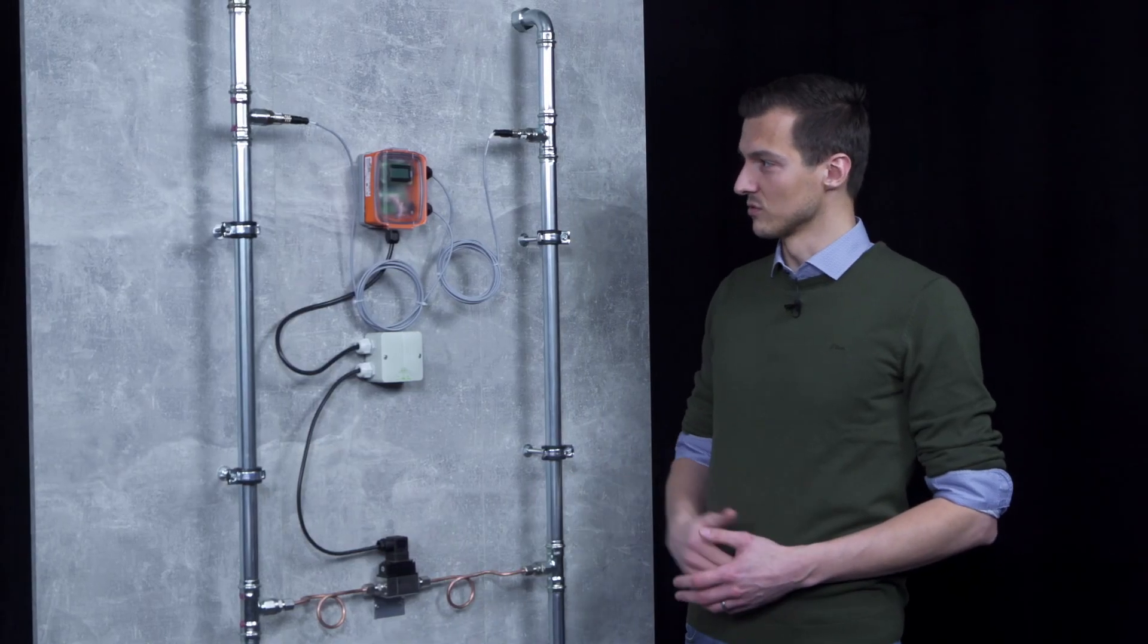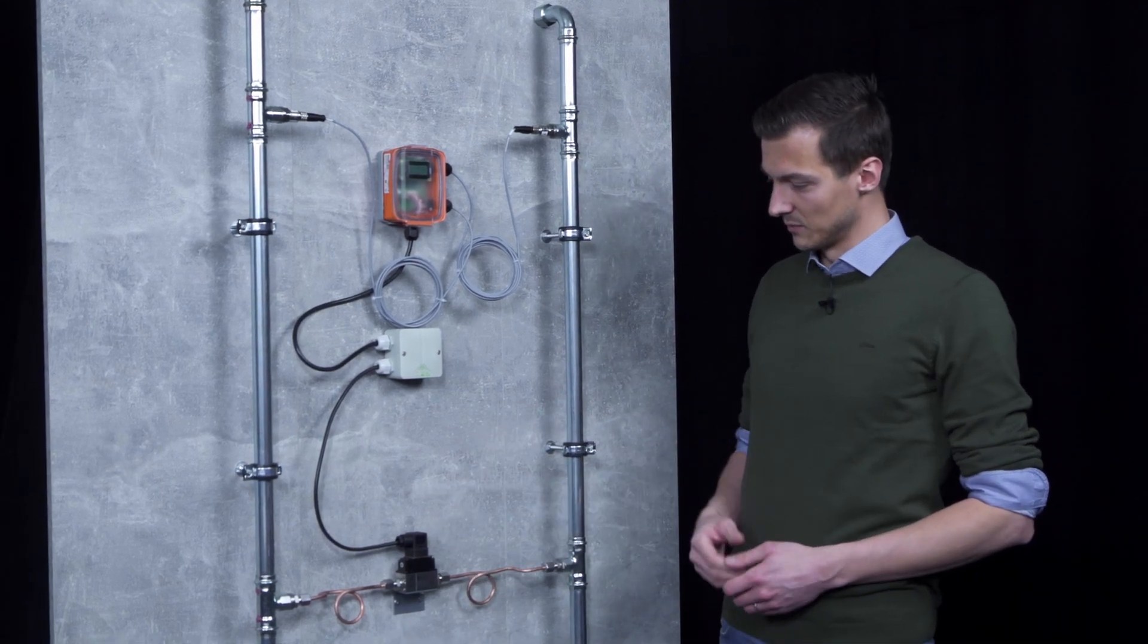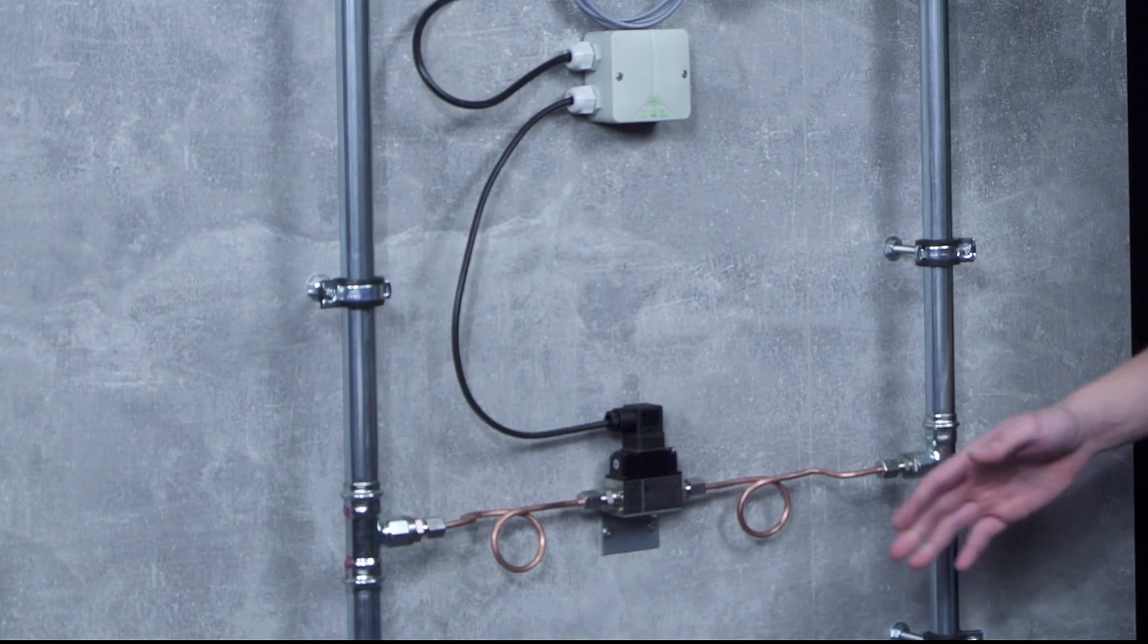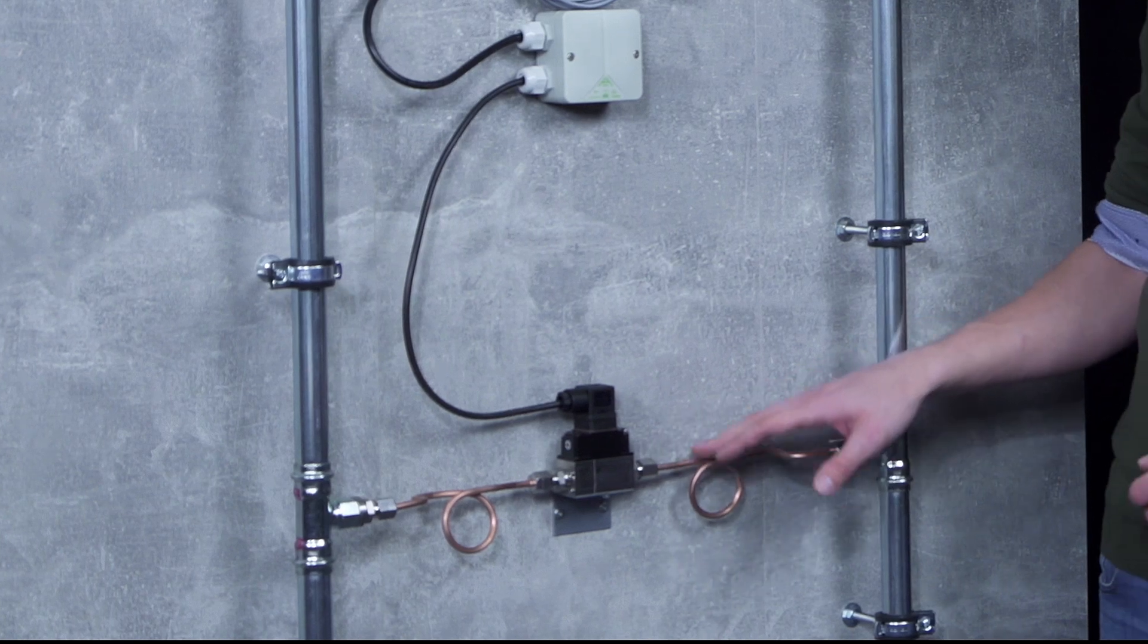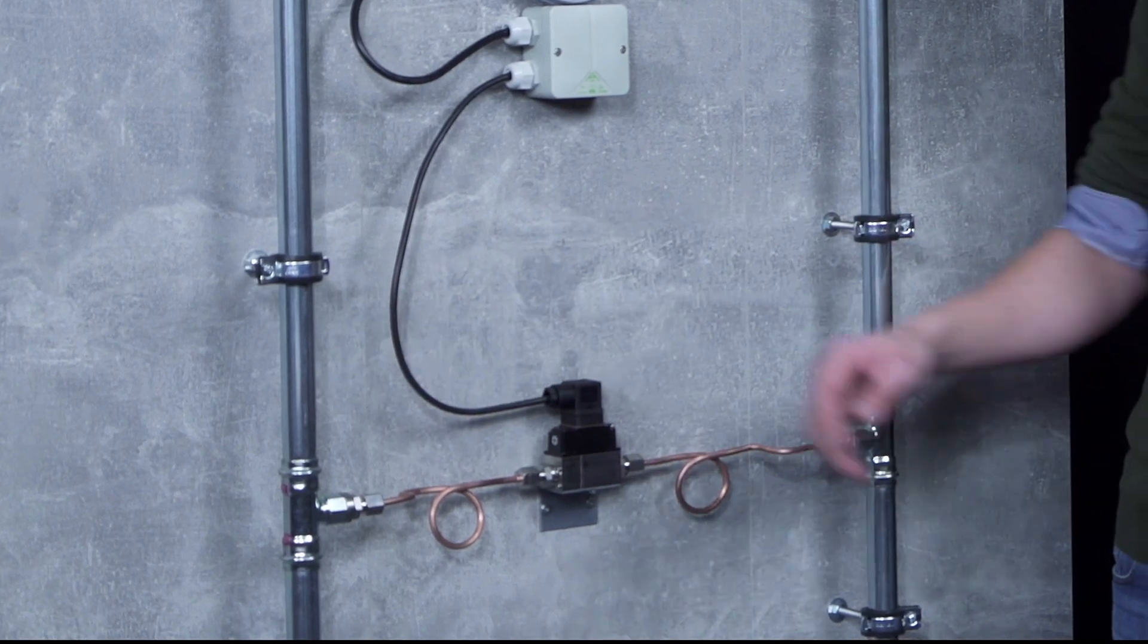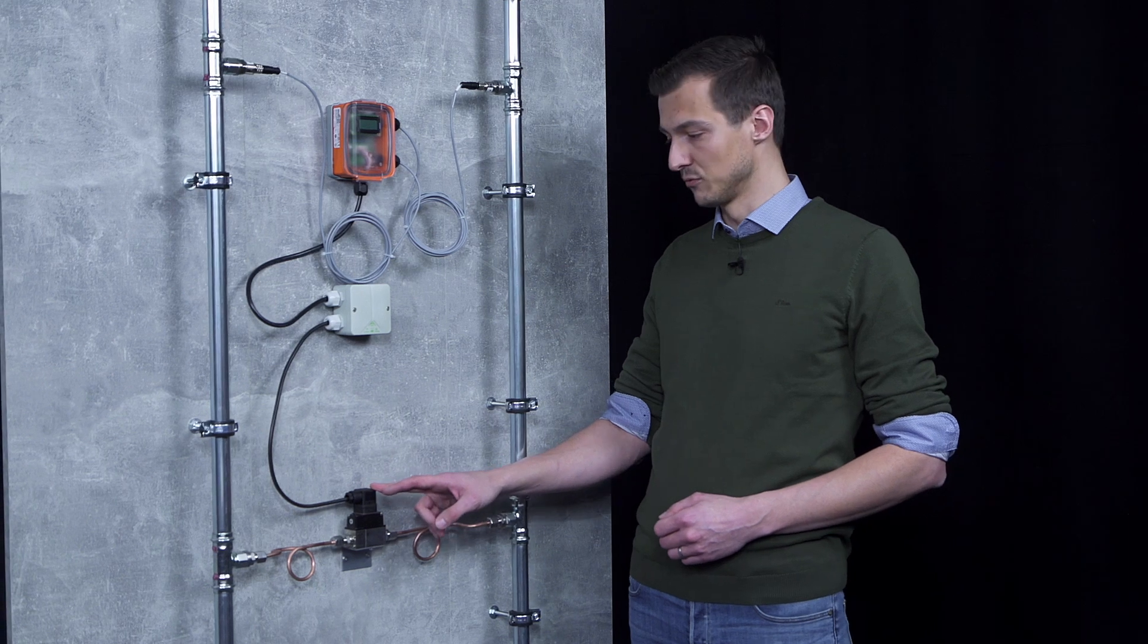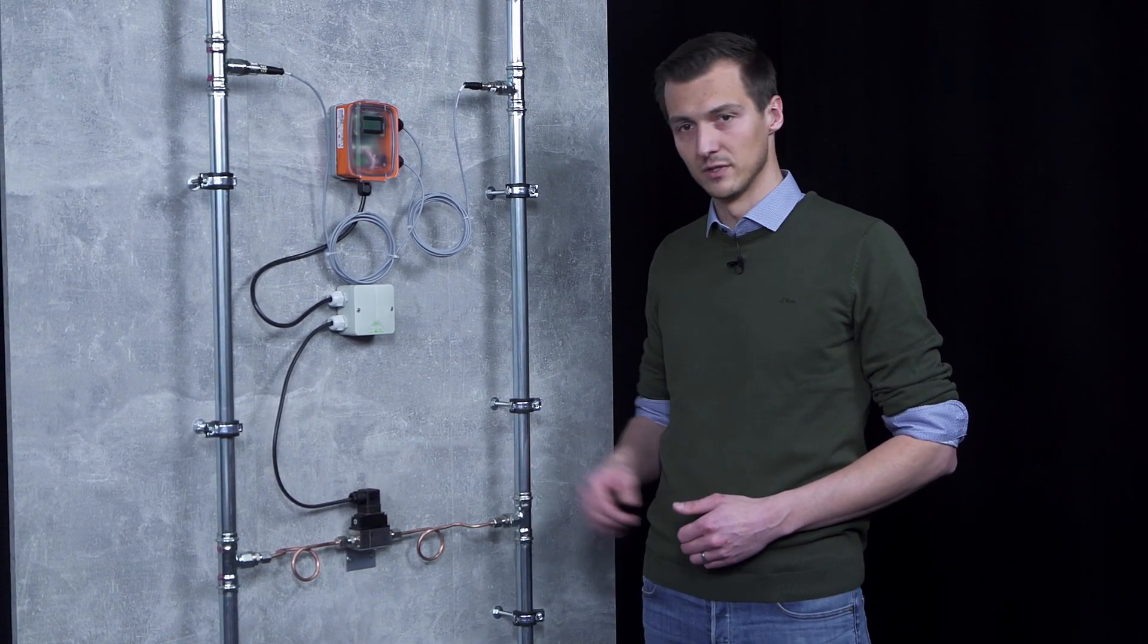We have now installed and commissioned both differential pressure sensors. Once again you see the 22 WDP, a solid, robust differential pressure sensor with a measuring diaphragm. This means it needs a hydronic connection to both strands. The WDP is available with different pressure ranges, as well as with voltage output 0 to 10 volts or with a 4 to 20 milliamp power output.